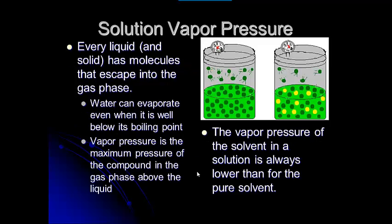First we need to talk about vapor pressure and the effect that adding a solute to a solvent has on it. When we have a liquid or solid, there are molecules that are escaping into the gas phase — they come away from the surface of the liquid. You can think about that like evaporating water when there's a puddle on the street. The water's not at its boiling point, but the water will evaporate into the air, so those molecules are leaving the surface of the water. The vapor pressure is the maximum pressure of the compound in the gas phase above the liquid.